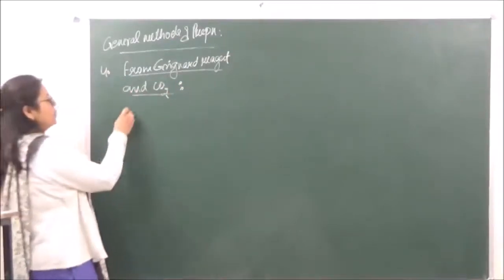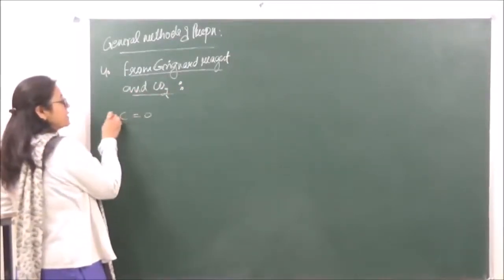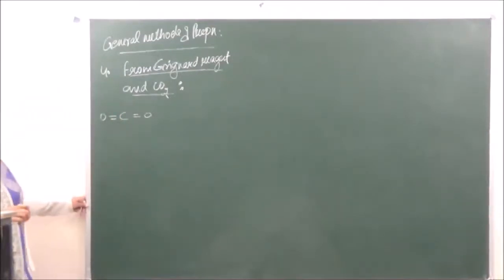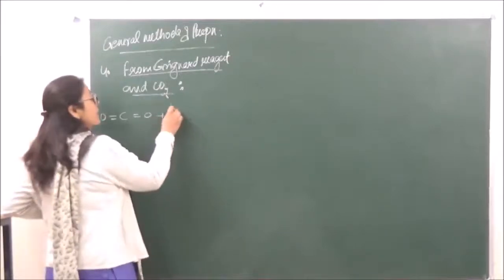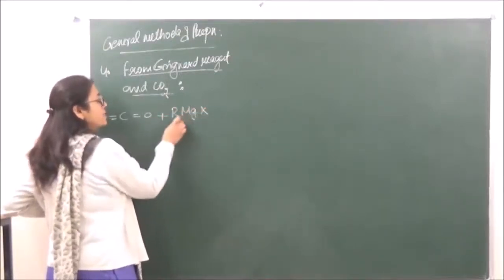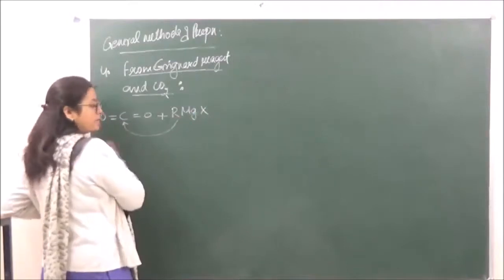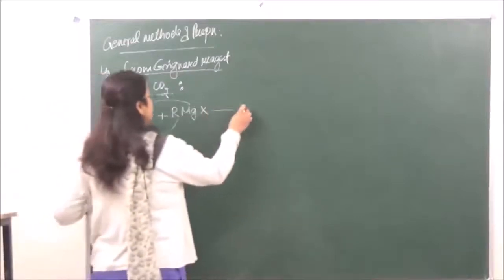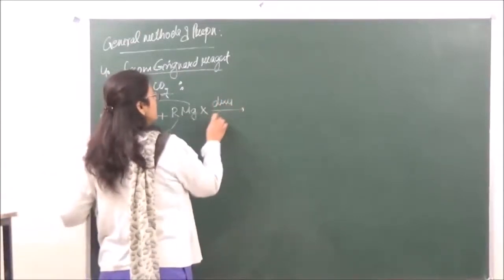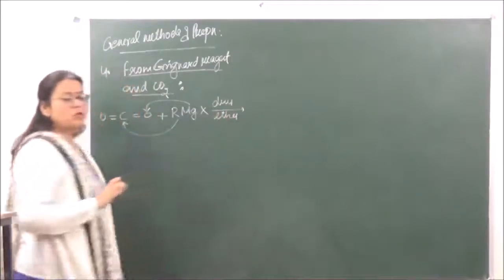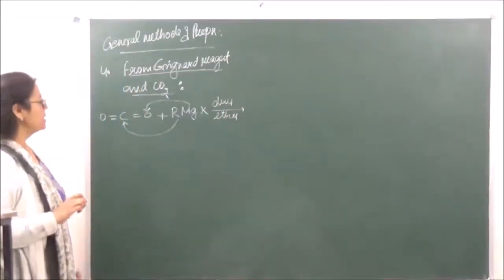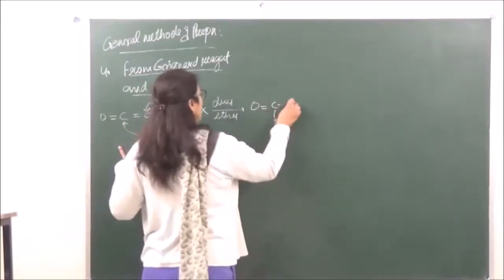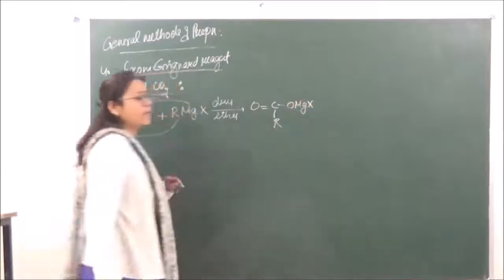When we are talking about carbon dioxide, it is going to have this kind of a structure. The mechanism of the reaction will be the same as we have discussed for aldehydes. The R group will go and attack at the carbon, and MgX will attack at the oxygen. The reaction takes place in the presence of dry ether because of the very high reactivity of the Grignard reagent. So what we get is C(R)(O)(Mg)(X).